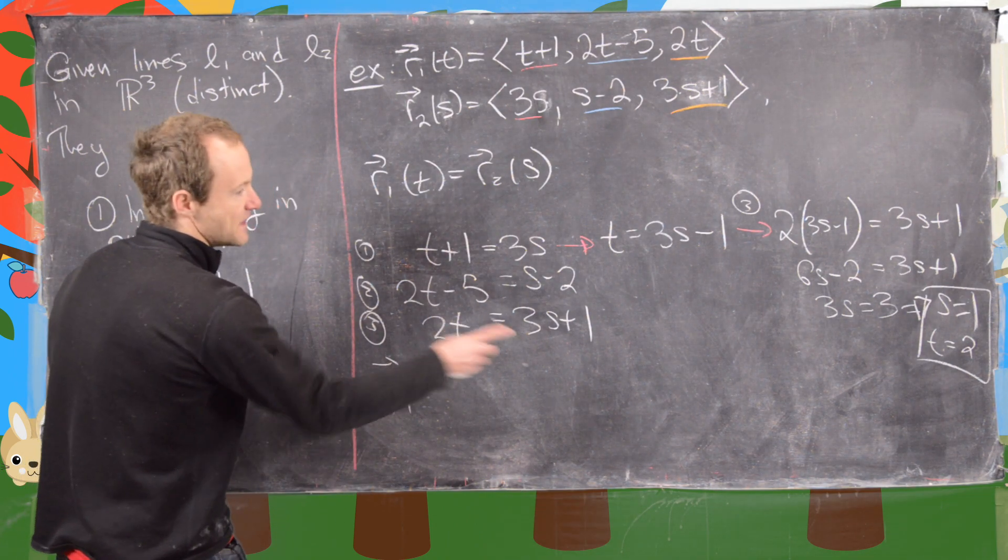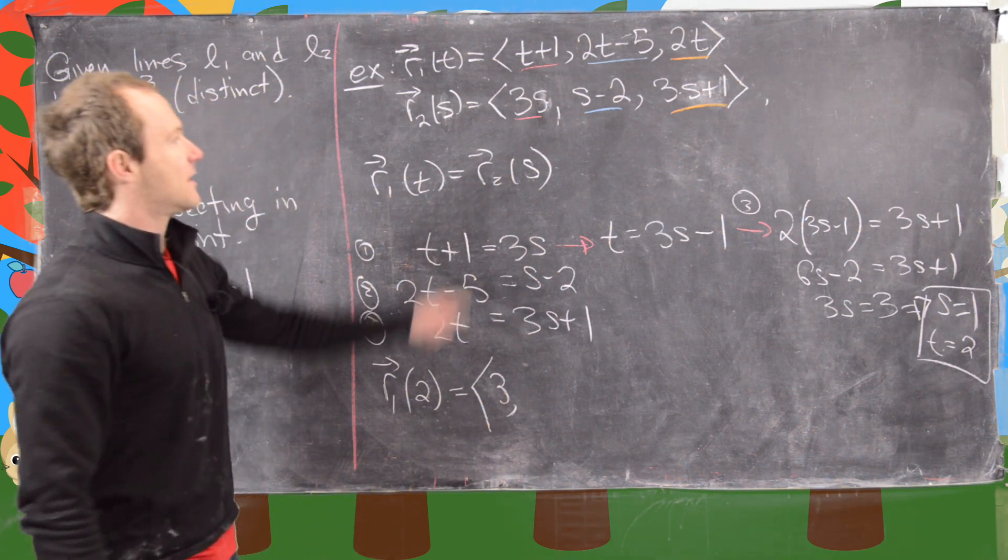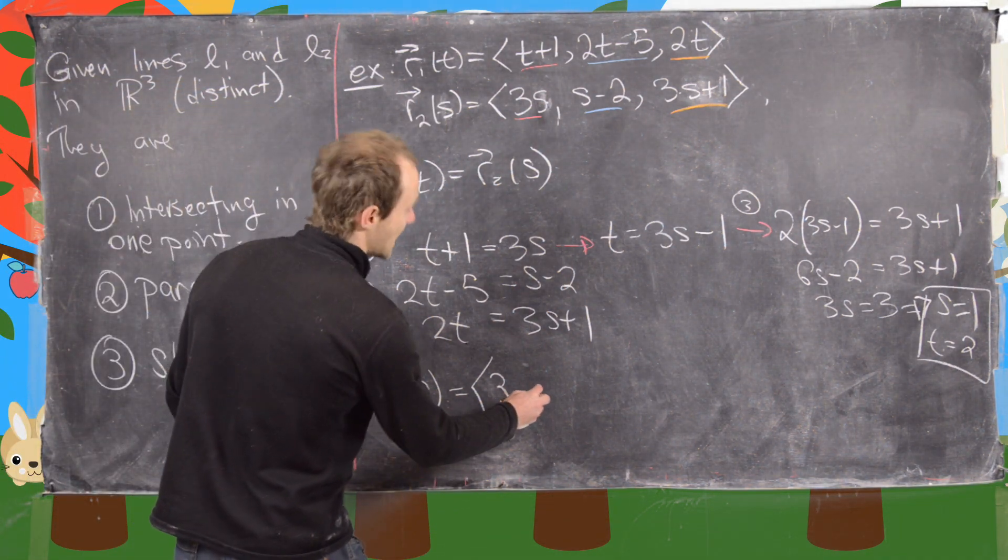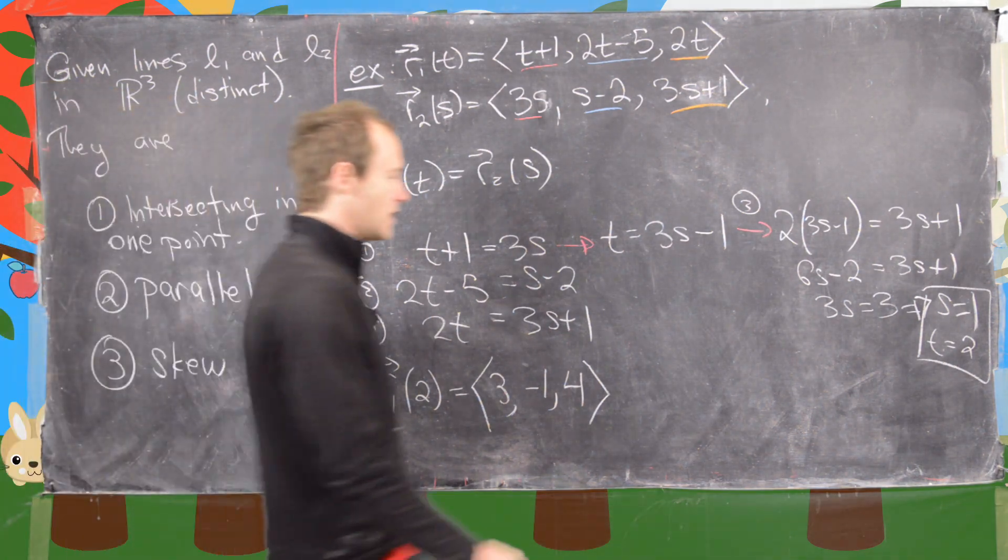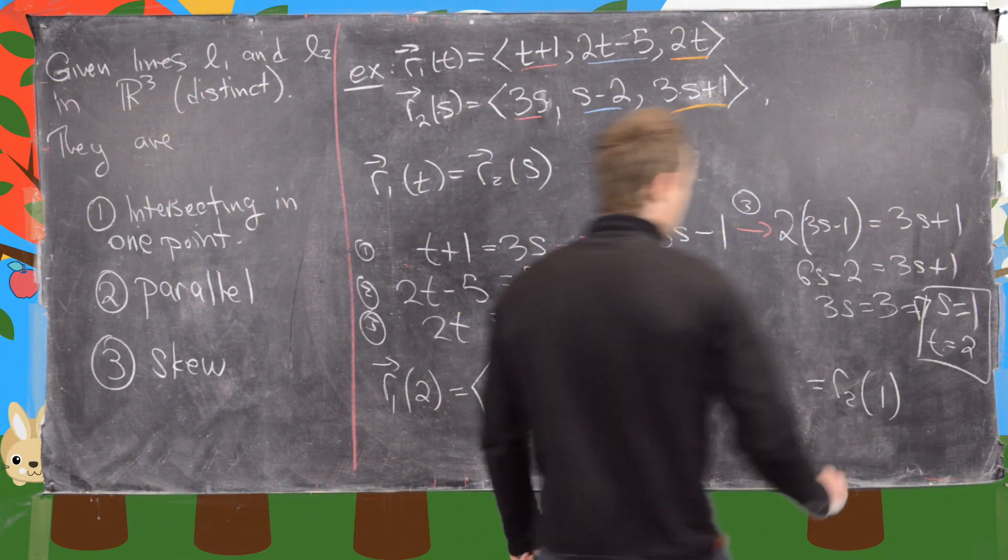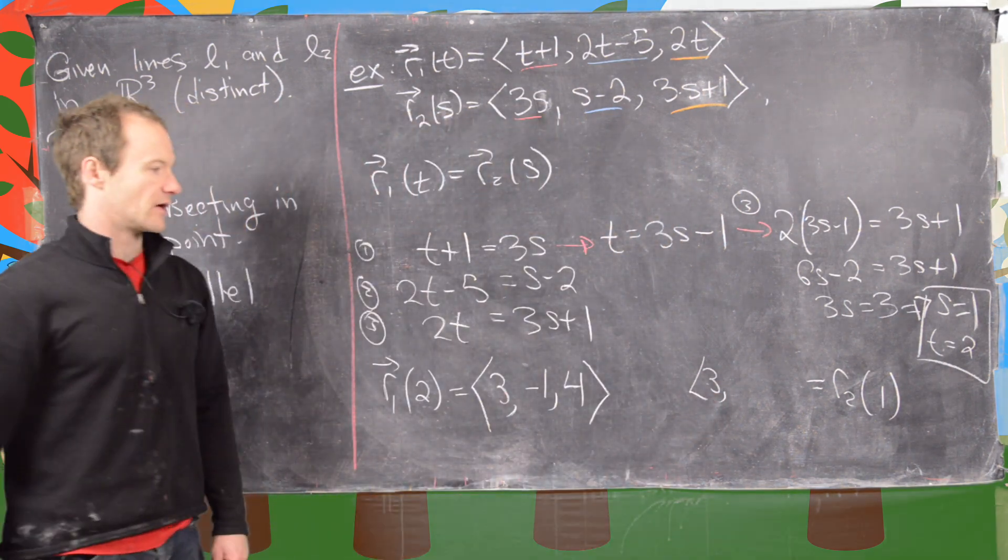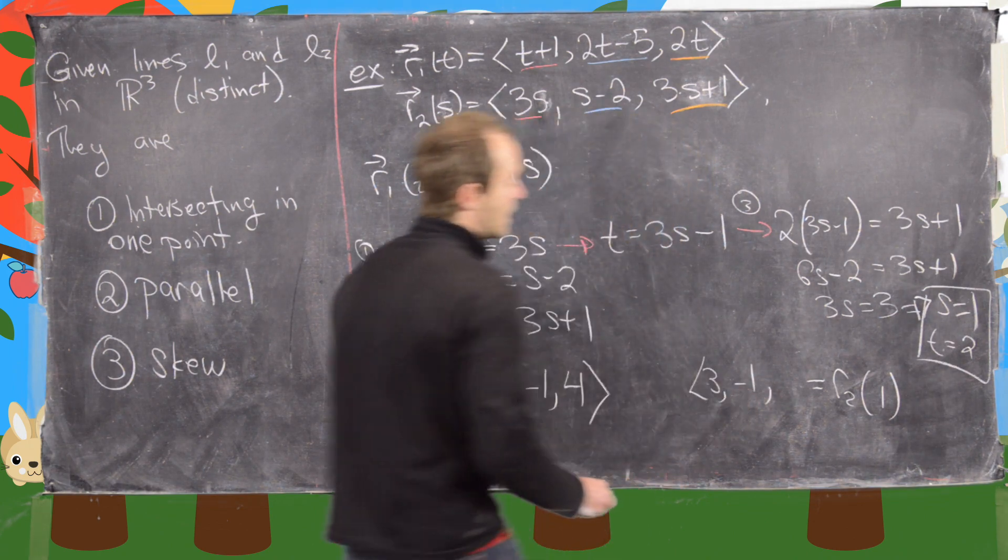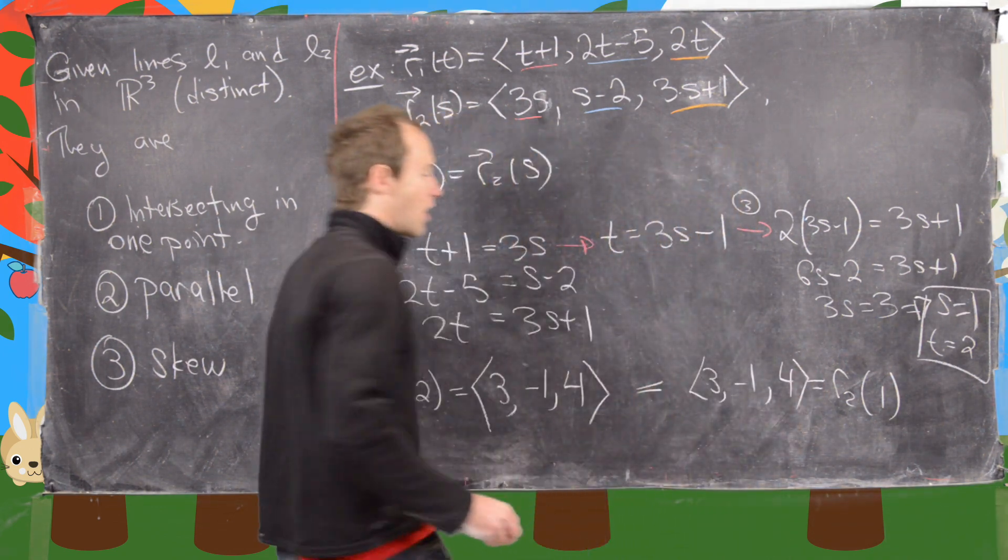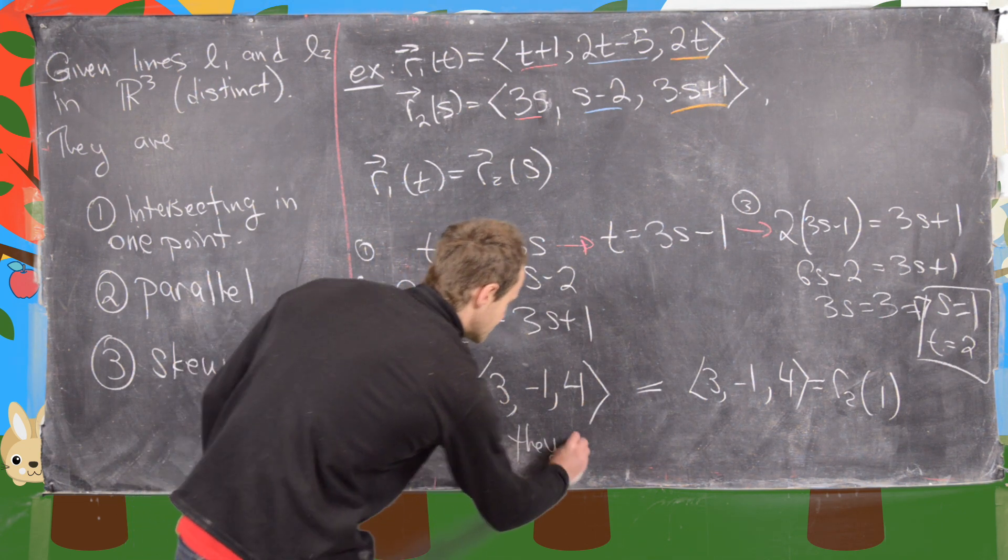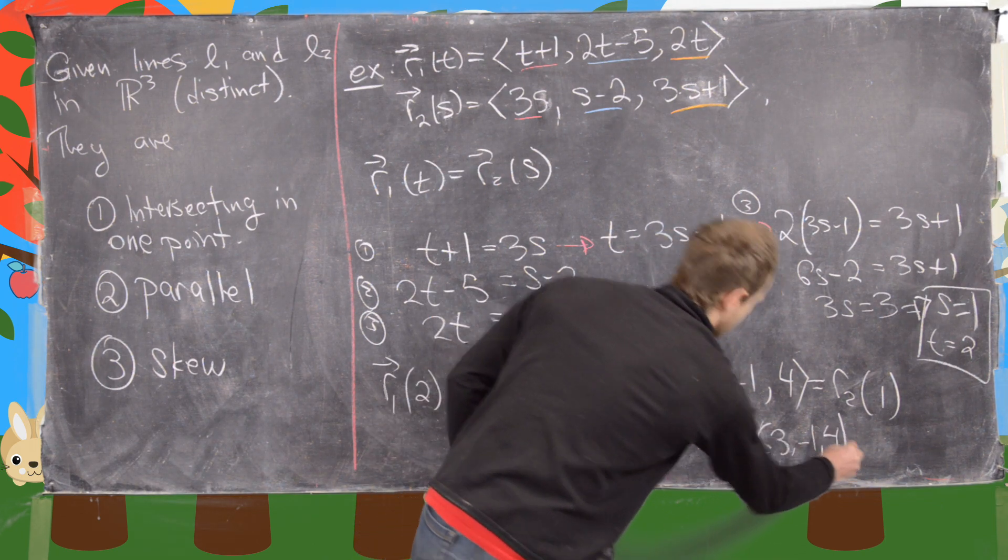Let's do R1 of 2. Notice that gives us (3, -1, 4). But now we'll do R2 of 1, plugging S equals 1 into that. We're going to have 3, then 1 minus 2 is -1, and 3 times 1 plus 1 is 4. So these are equal. They intersect at the point (3, -1, 4).